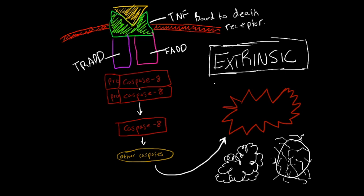So they are inactive. Caspases are usually involved in the apoptotic pathway, but when they have this pro-caspase bound to them, they are inactive. So both of these will cleave each other. So if we draw a little pair of scissors here, they will cut the pro part off. So they are both activated and turned into caspase-8 here.